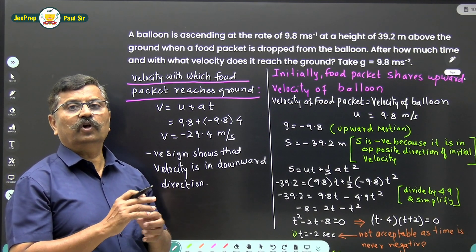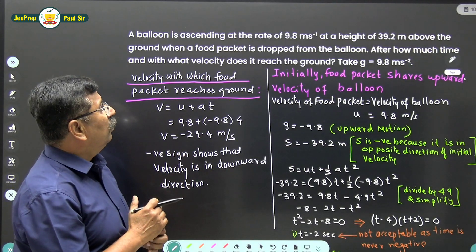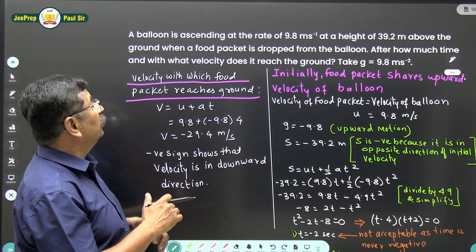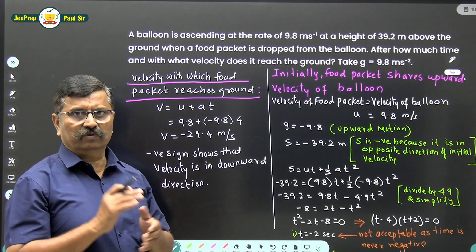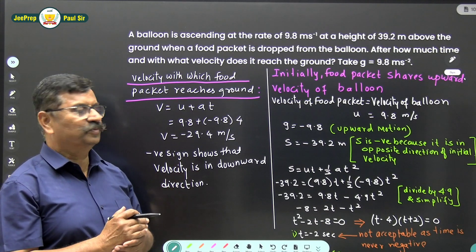Naturally, the velocity of the food packet equals the velocity of the balloon. We want to find out after how much time and with what velocity it reaches the ground. Now let us work out this problem.